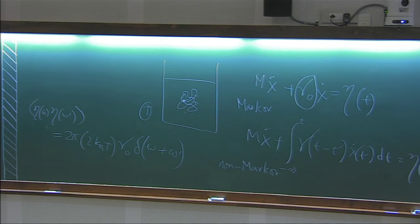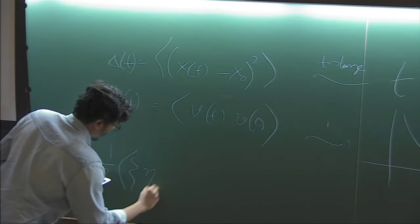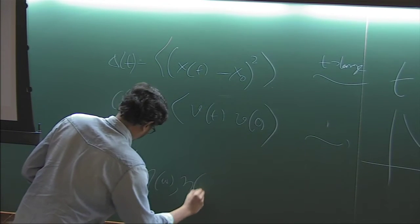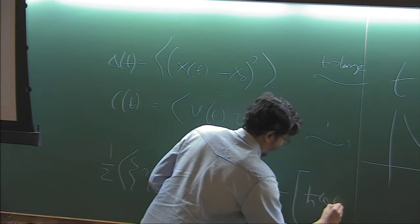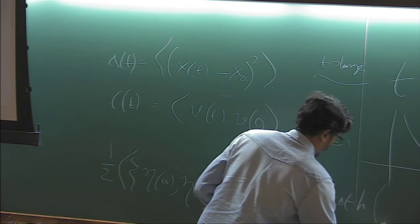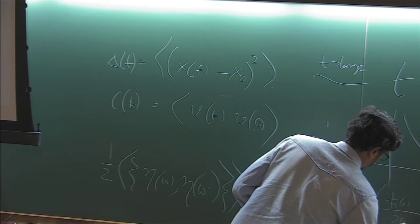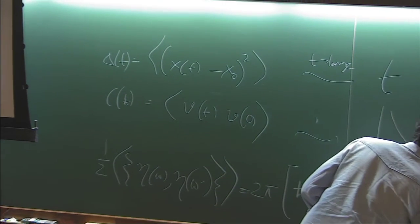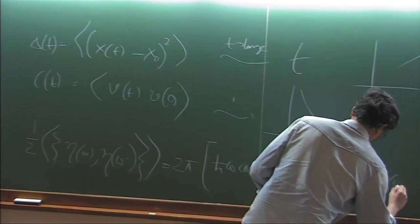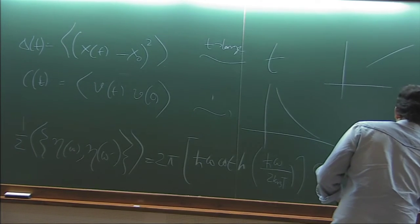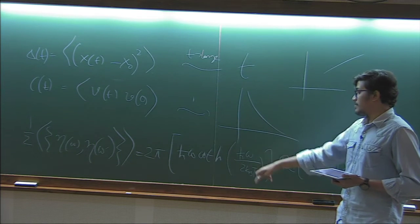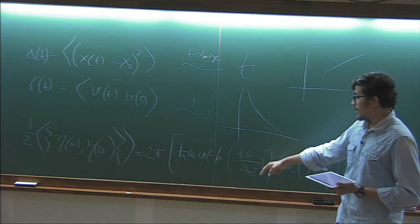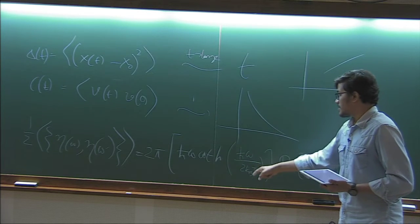And basically one gets a very famous fluctuation dissipation relation. See, in the whole theory there is no h bar. So now you'll see some h bar. Yeah. So this is the most general fluctuation dissipation theorem for this, at least in linear response region.